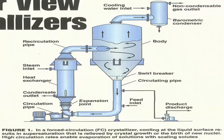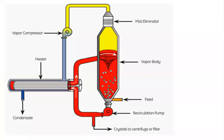In a forced circulation crystallizer, cooling at the liquid surface results in supersaturation, which is relieved by crystal growth or the birth of new nuclei. High circulation rates enable evaporation of solutions with scaling solutes. The recirculation pump speed determines how fast the feed is recirculated.